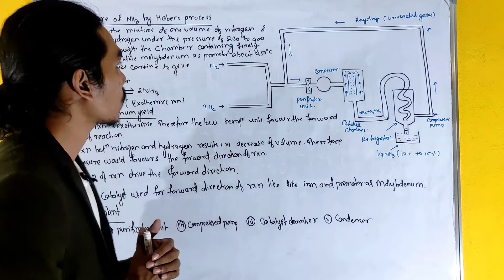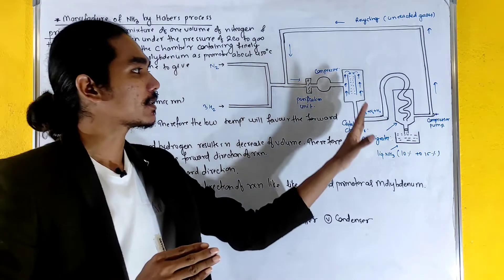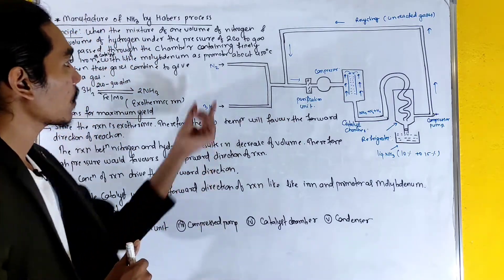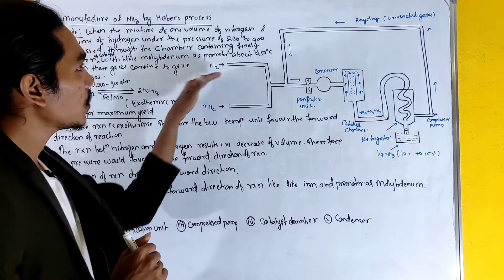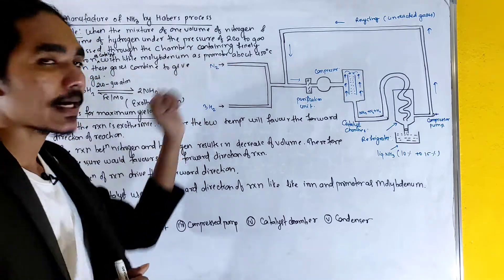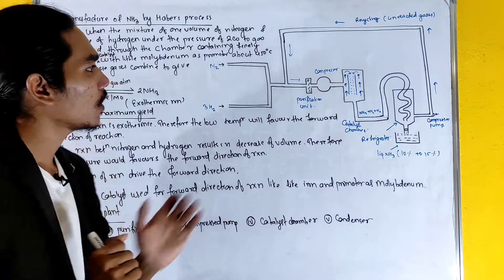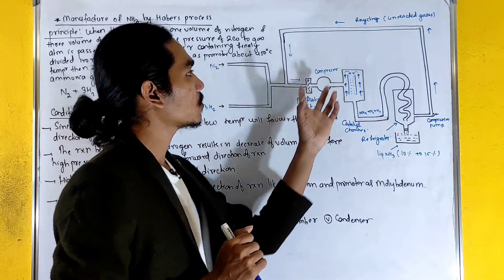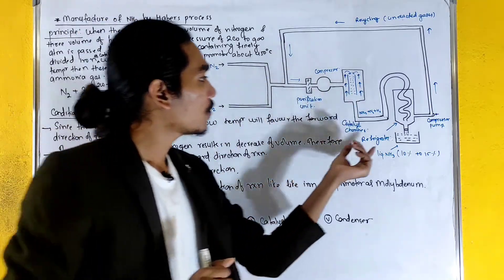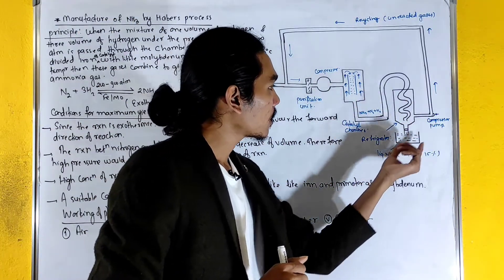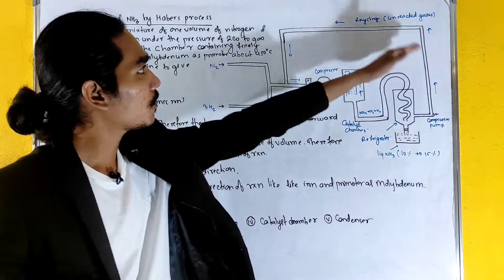What we are doing is the process of Haber's process. We are using nitrogen and hydrogen molecules. What are the conditions? We will pass gases of nitrogen and hydrogen. We have a purification unit, a compressor, a catalyst chamber, and refrigerators. We have a condenser. The gases are liquefied, and unreacted gases are recycled further.